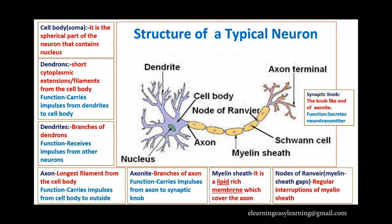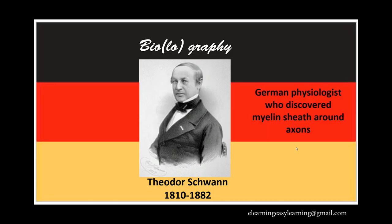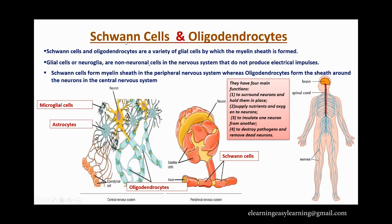Now we are going to learn more about the myelin sheath. You can see one axon here covered with a shiny white material — that is the myelin sheath. This myelin sheath is made up of a special type of cell known as the Schwann cell. The Schwann cell got its name after the scientist Theodor Schwann, a German physiologist who discovered the myelin sheath around the axon.